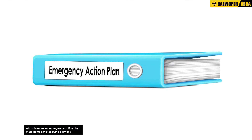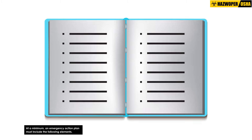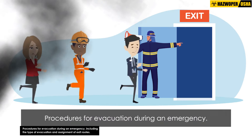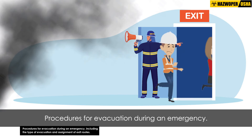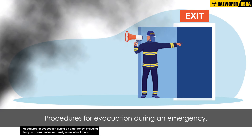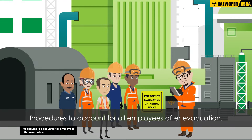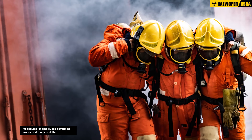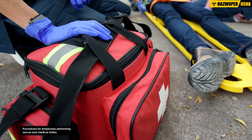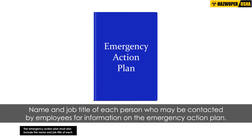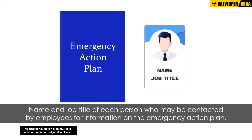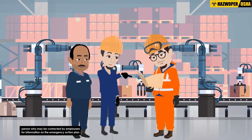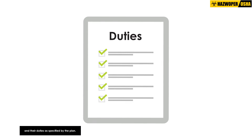At a minimum, an emergency action plan must include the following elements: procedures for reporting an emergency; procedures for evacuation during an emergency, including the type of evacuation and assignment of exit routes; procedures to account for all employees after evacuation; and procedures for employees performing rescue and medical duties. The plan must also include the name and job title of each person who may be contacted by employees for information on the emergency action plan and their duties as specified by the plan.